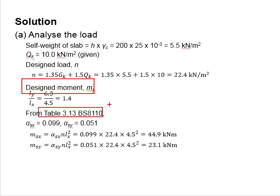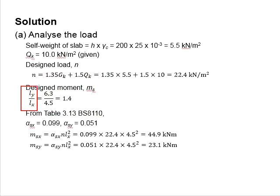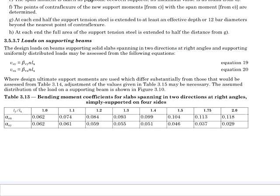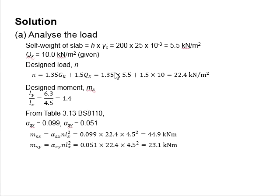To find the design moment, you need to refer to Table 3.13 of BS 8110. First, determine the ratio ly/lx by dividing the longer span by the shorter span, which is found to be 1.4. Referring to Table 3.13 for ly/lx equals 1.4, the coefficients alpha_sx and alpha_sy are 0.09 and 0.051 respectively. Substituting these values gives the moment resistance for the shorter and longer spans.